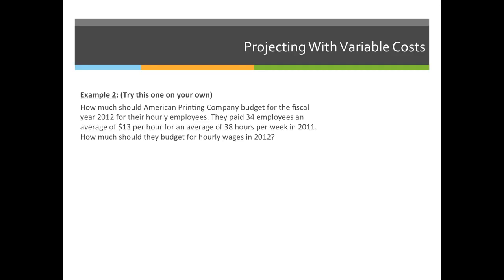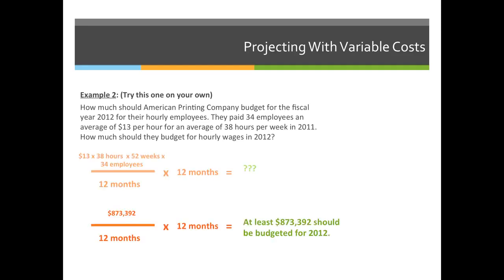When we do this problem, we have a few steps to do first. We have to figure out how much they spent last year, divide it to get a monthly cost, then multiply it by 12 to get the yearly cost. So we have $13 per hour, each employee working an average of 38 hours per week for 52 weeks in a year, and there are 34 employees. Multiplying all four numbers together comes to $873,392. When we divide by 12 to get the monthly rate and then multiply by 12 again, the total amount we need to budget for 2012 is at least $873,392.